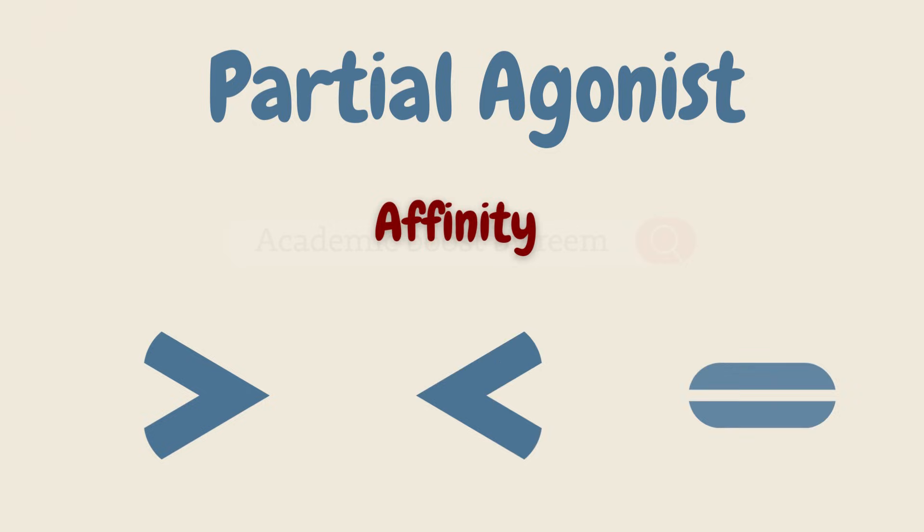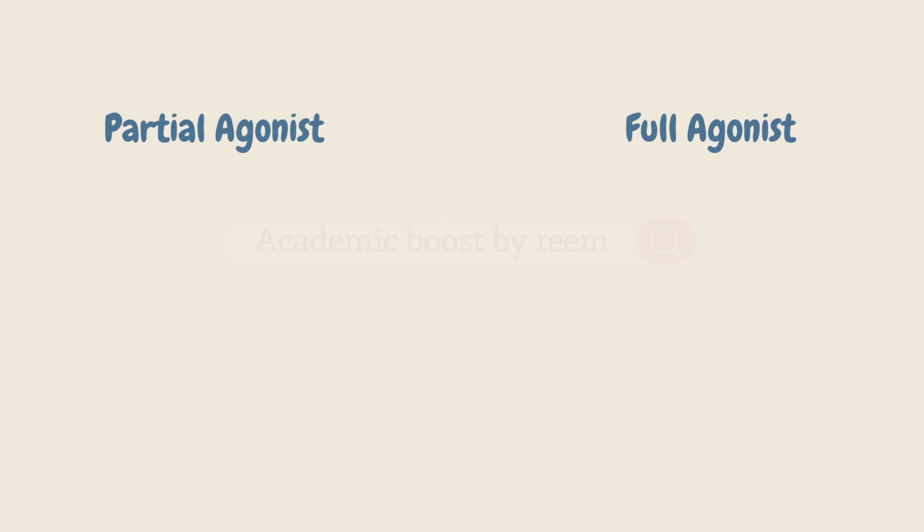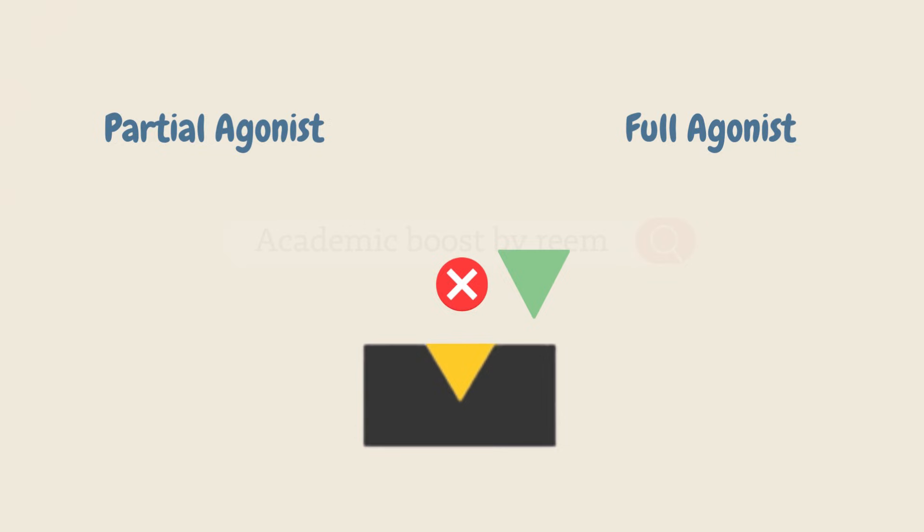Regarding affinity, the partial agonist could be greater than, lower than, or equal to the full agonist. We will explain what affinity means in detail in another video. What will happen if a partial agonist and a full agonist are presented at the same time for a receptor? If the partial agonist binds first, it will prevent full activation by a stronger agonist, and we say that the partial agonist acted as an antagonist of the full agonist.